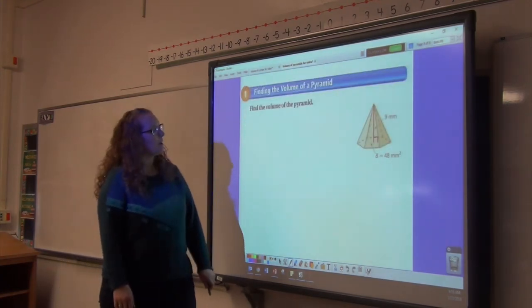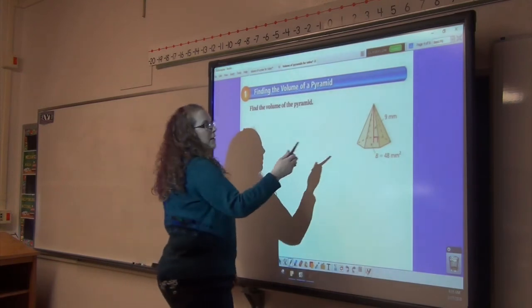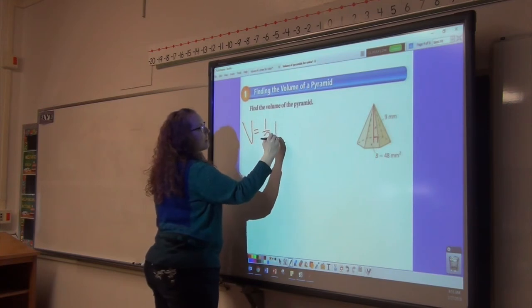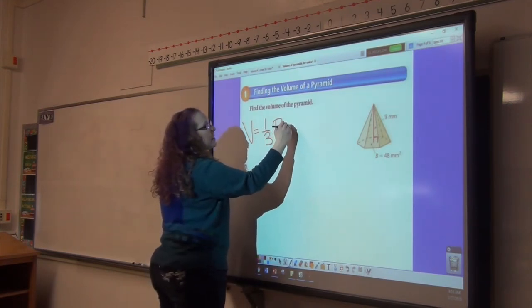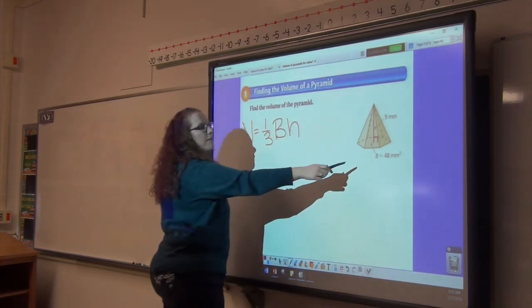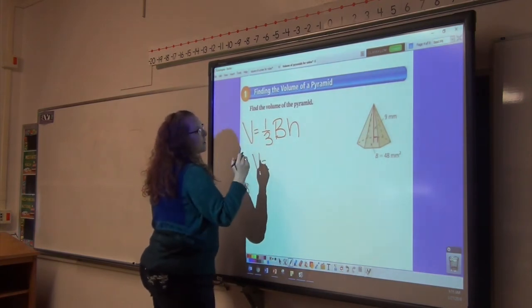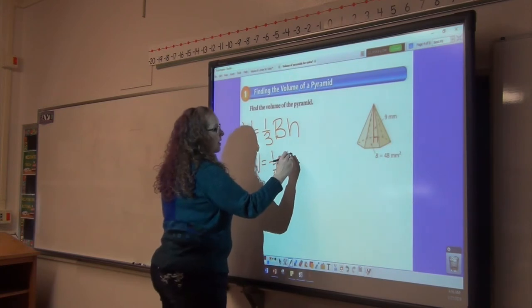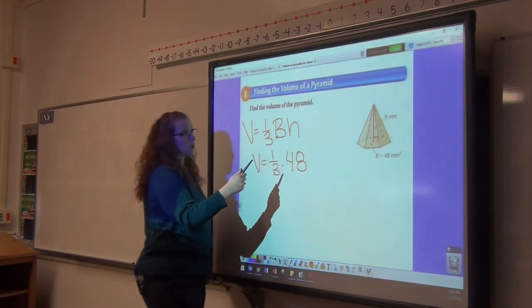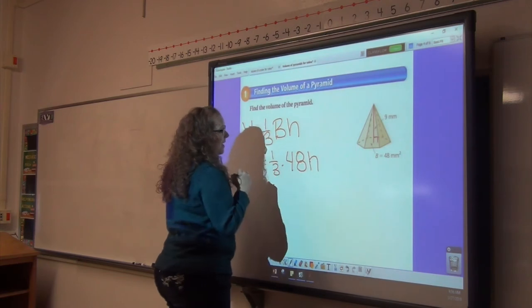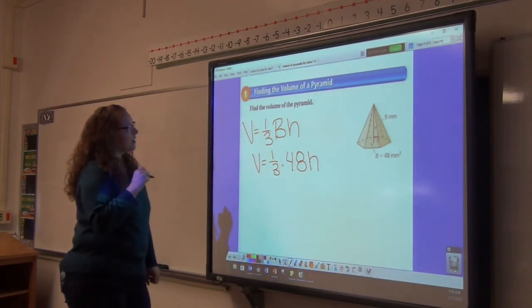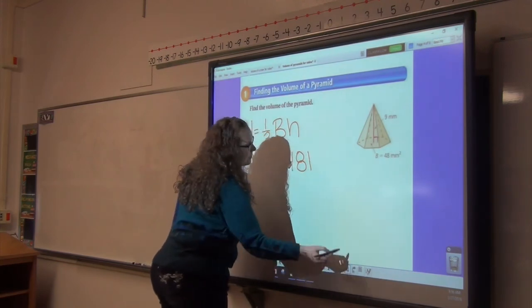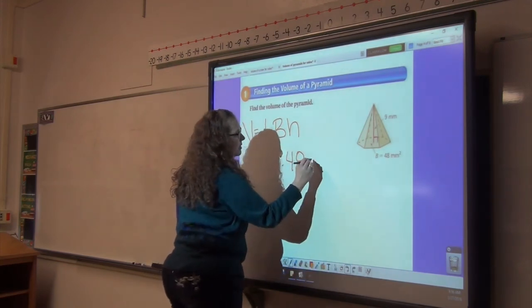Let's find the volume of this pyramid. It tells us that our base is 48. So our equation is one third times the area of the base times the height. The area of our base here is 48, so the volume of this pyramid is one third times the area of our base, which is 48, times the height. Our height is 9.